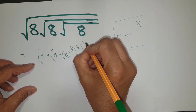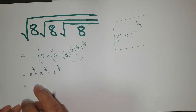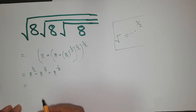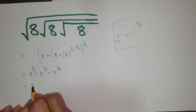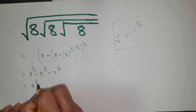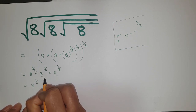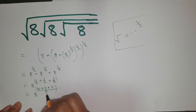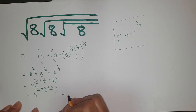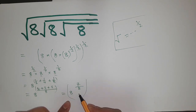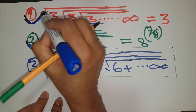Since we have the same base, we can combine the powers by adding them. That means 1 over 2 plus 1 over 4 plus 1 over 8, which equals 7 over 8. So the answer is 8 to the power 7 over 8 — exactly the answer shown previously. This power addition approach is what drives the finite nested square root formula.